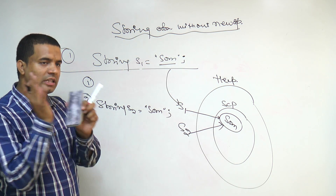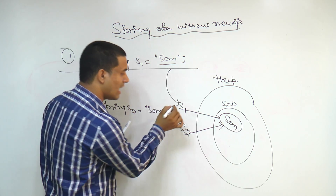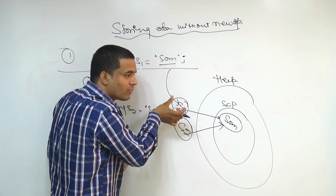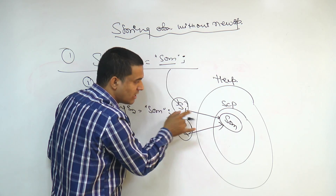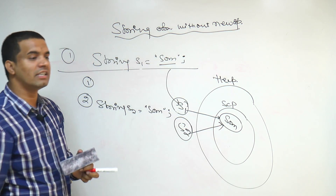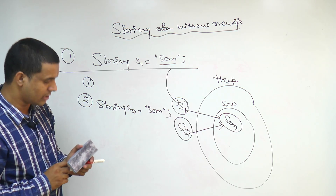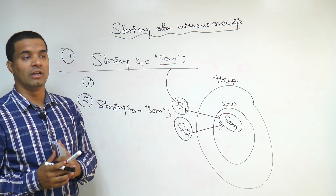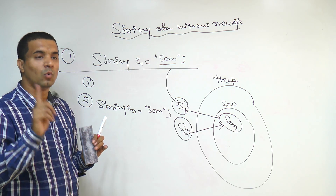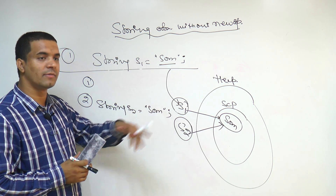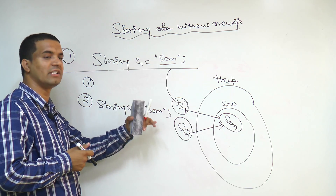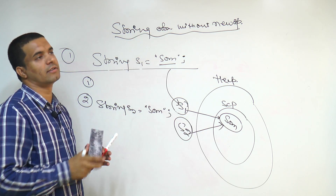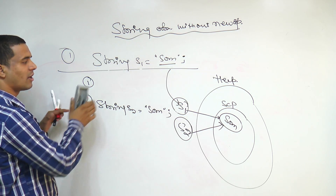By this, one thing becomes very clear: S1 and S2, when compared, return true both by address and by content — they are the same. You can ask: how many total objects are created? In the first case, only one object is created. In the second case, since the literal is already available, S2 just references the existing one — no new object is created.